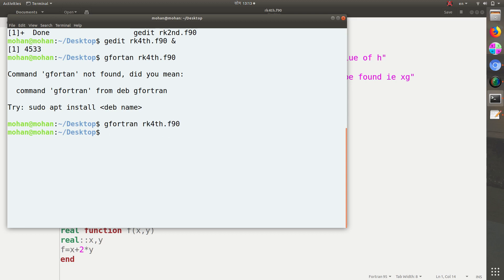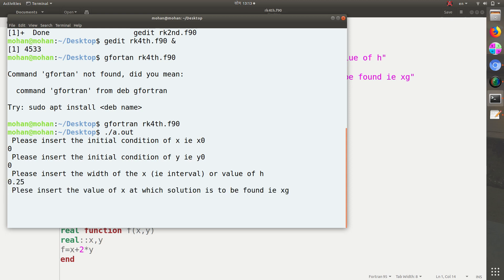This is how we can compile. Now see its output. Initial condition, this is also our previous example. Initial condition we have x equals 0, initial condition of y equals 0, value of h is 0.25, and then we have to find the solution at x equals 1. So at x equals 1, the solution is 1.40.